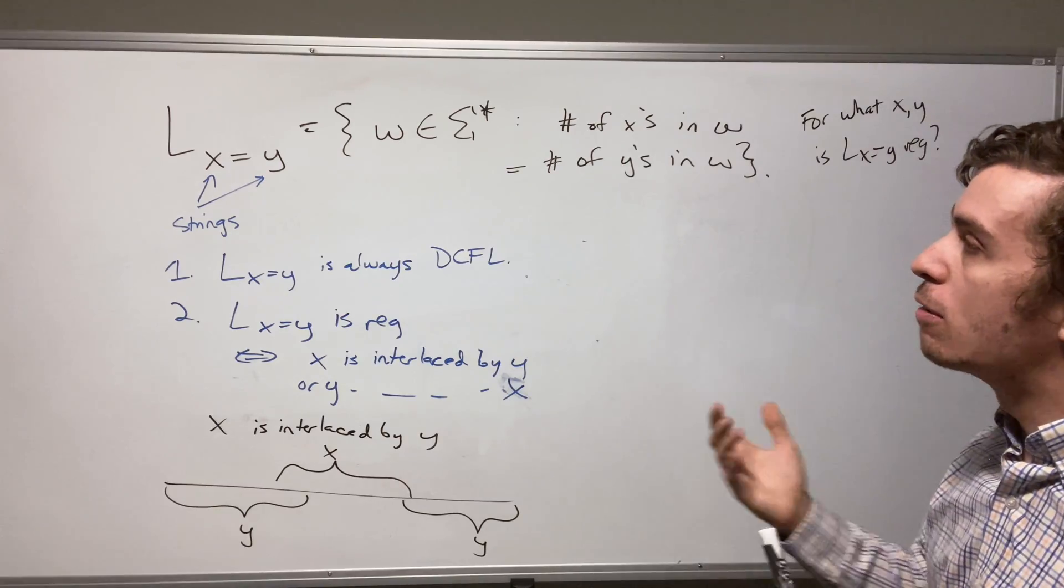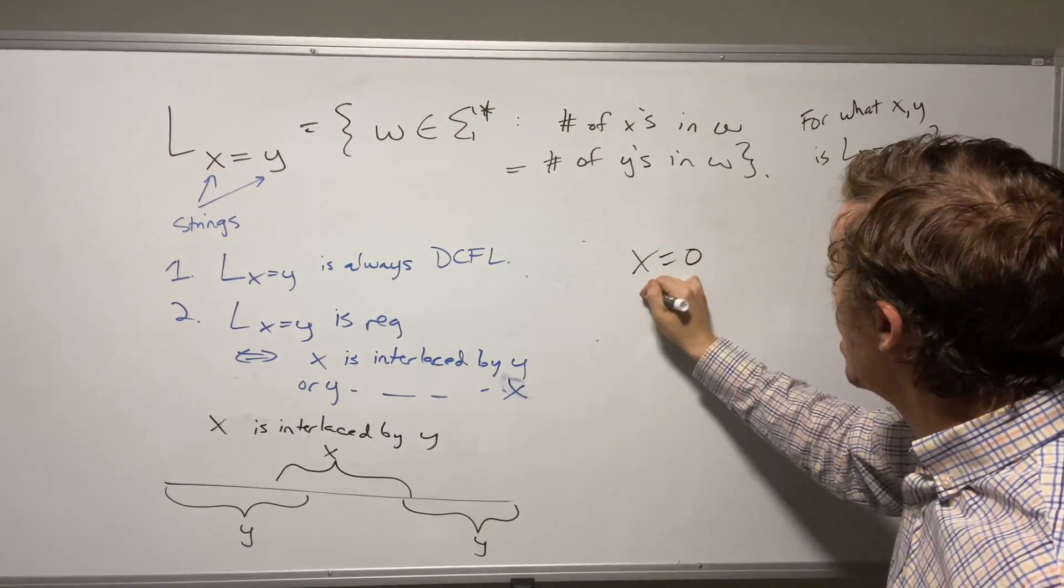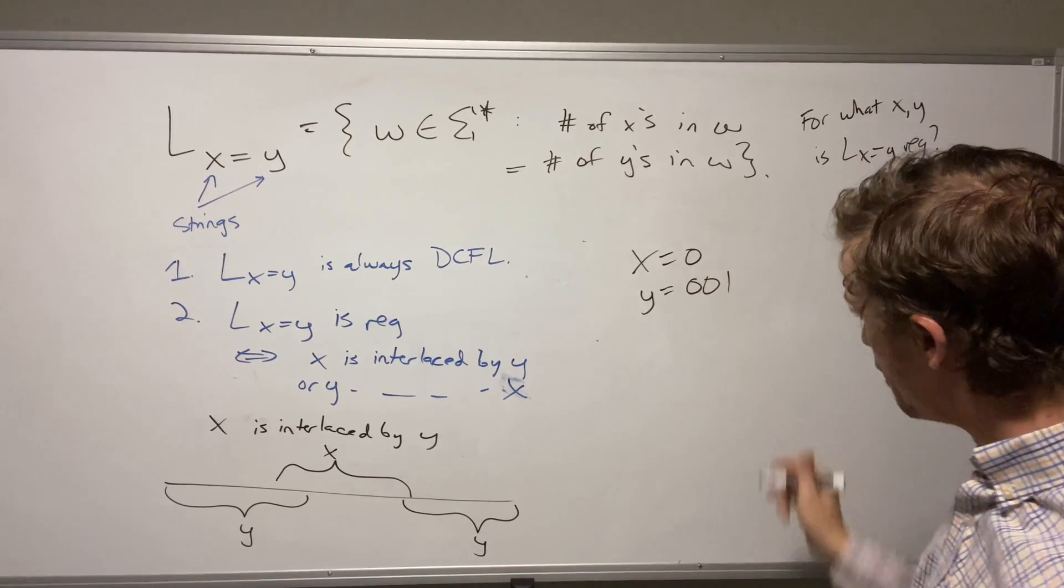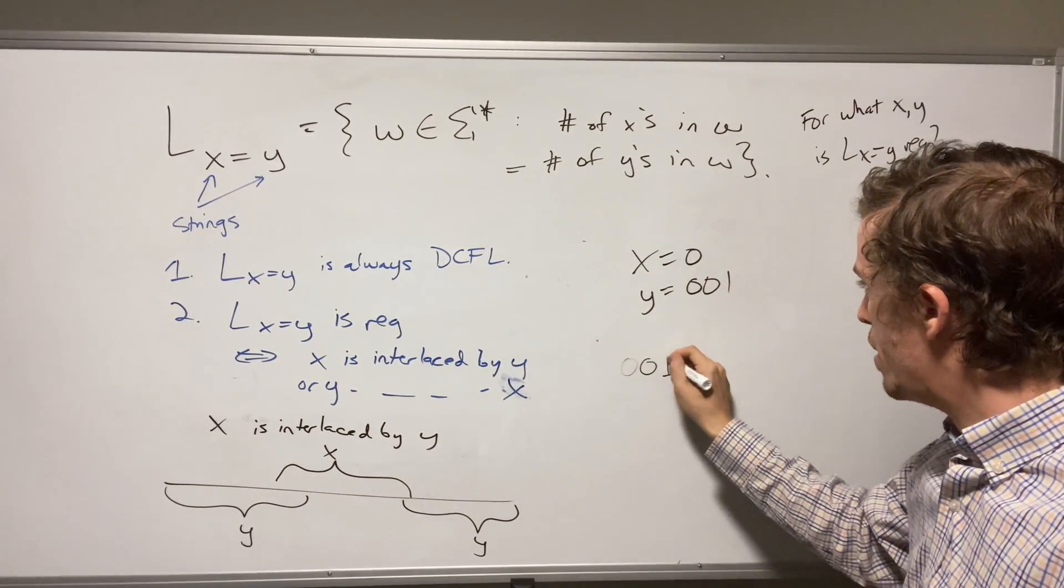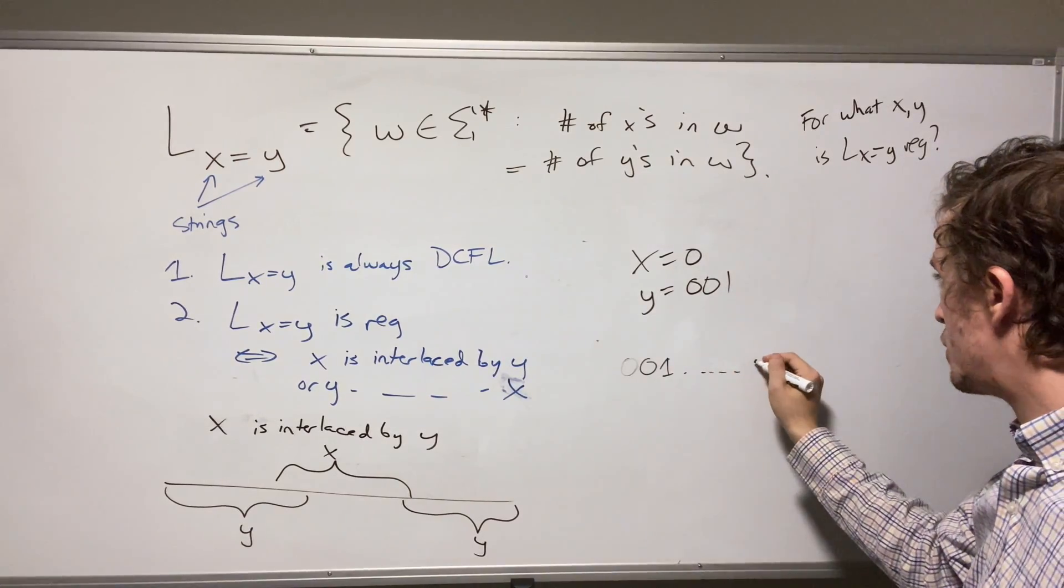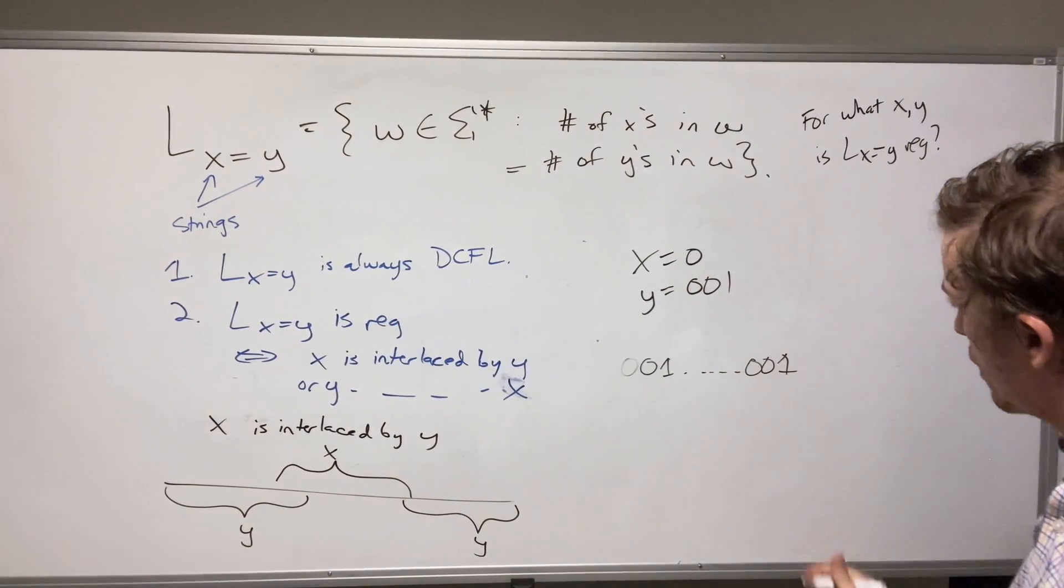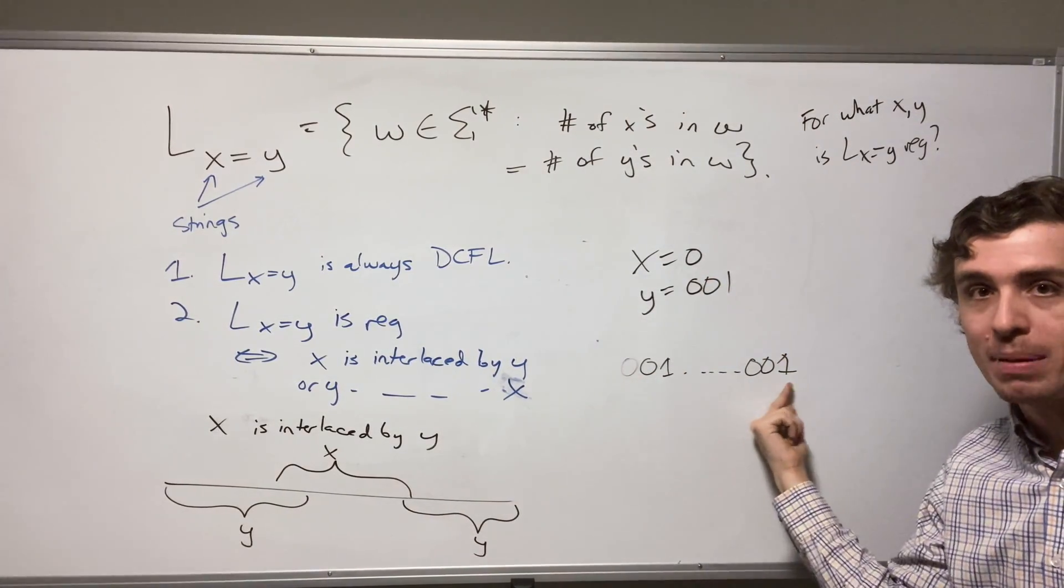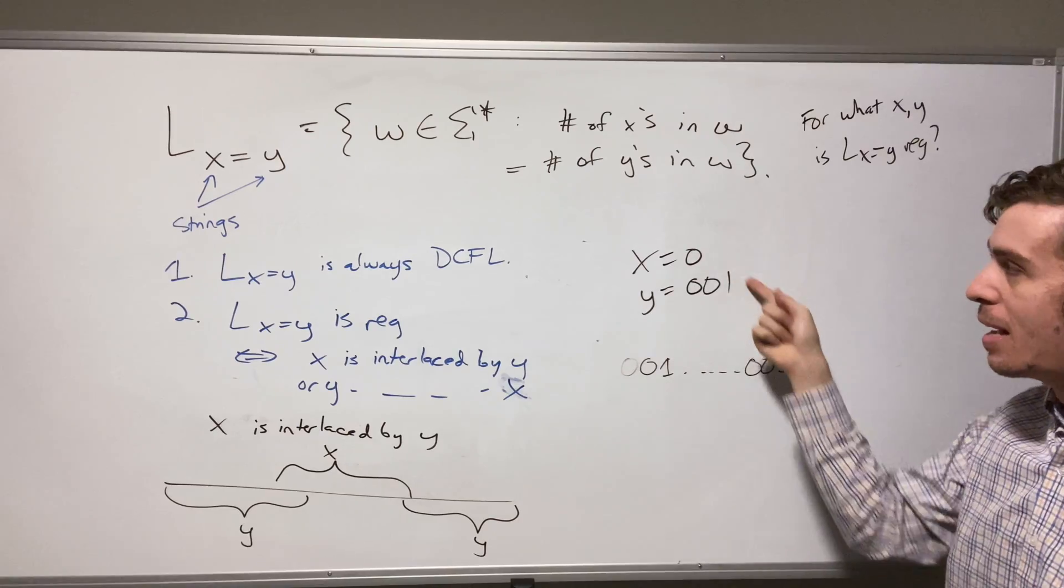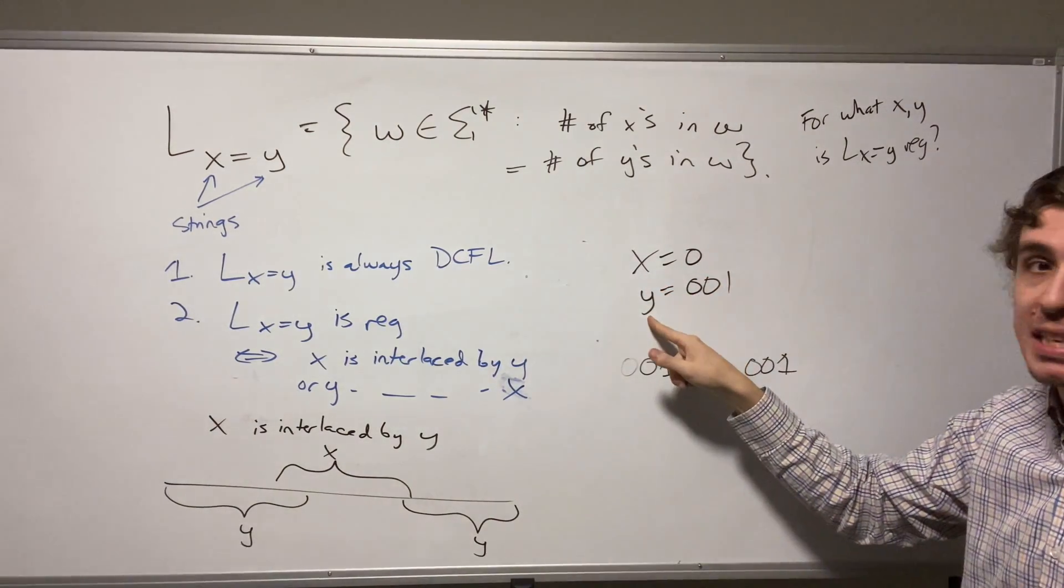So going back to what I was saying before. So let's say we have like X equals zero, Y equals zero zero one. So if we have, let's say zero zero one and then something else, and then zero zero one here, then clearly X is contained in this string. It's in several places. So therefore, this language is regular where X is equal to Y.